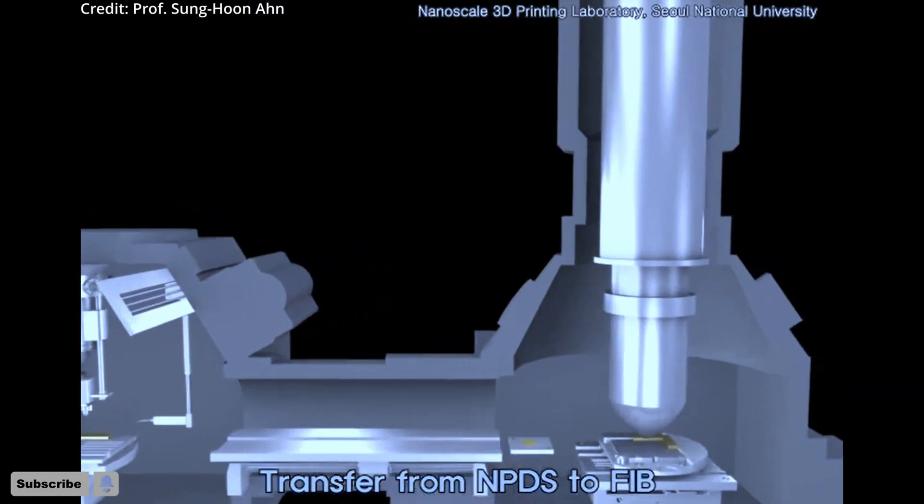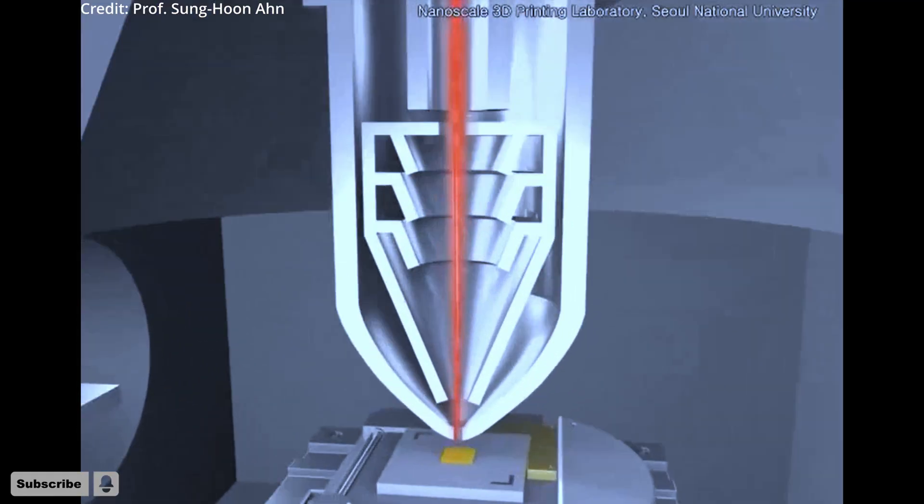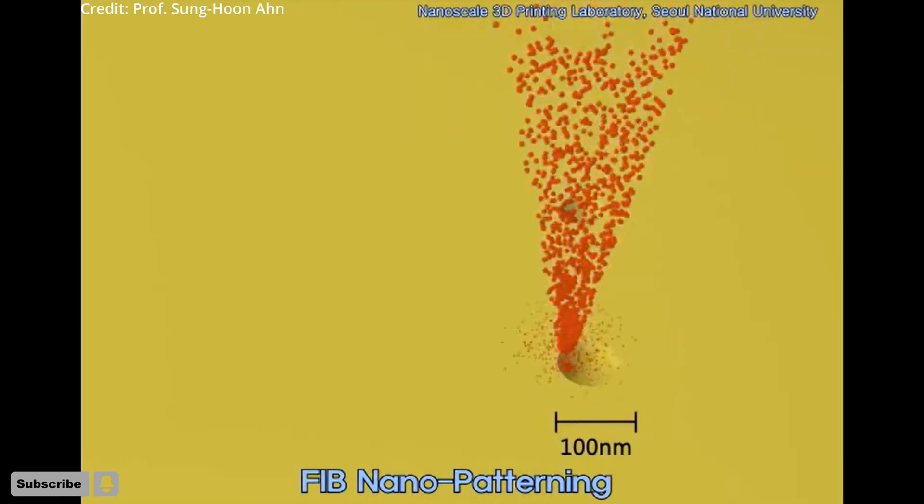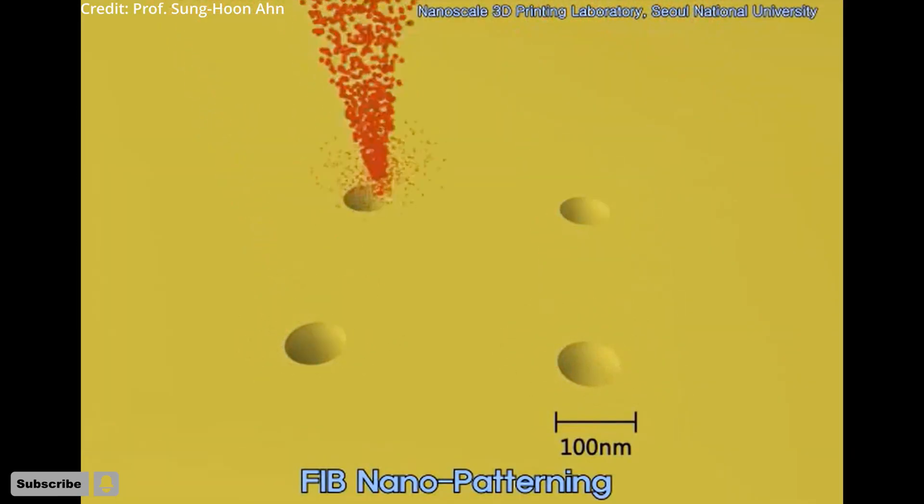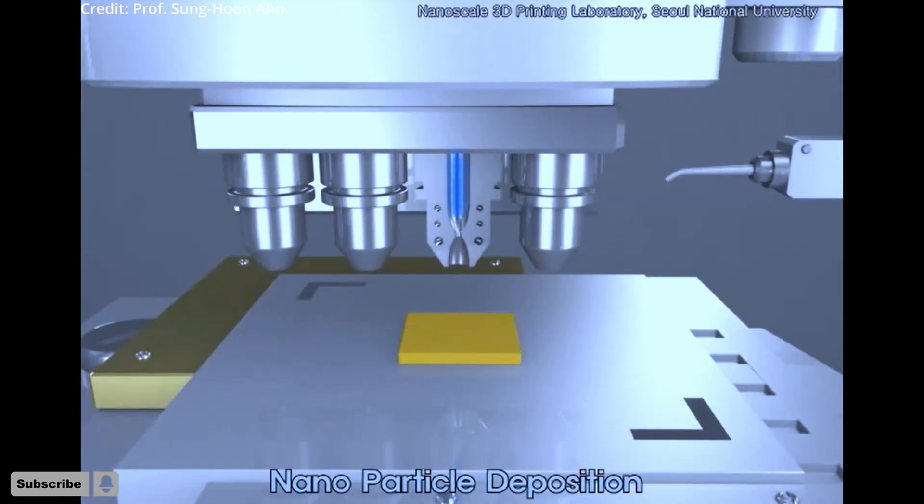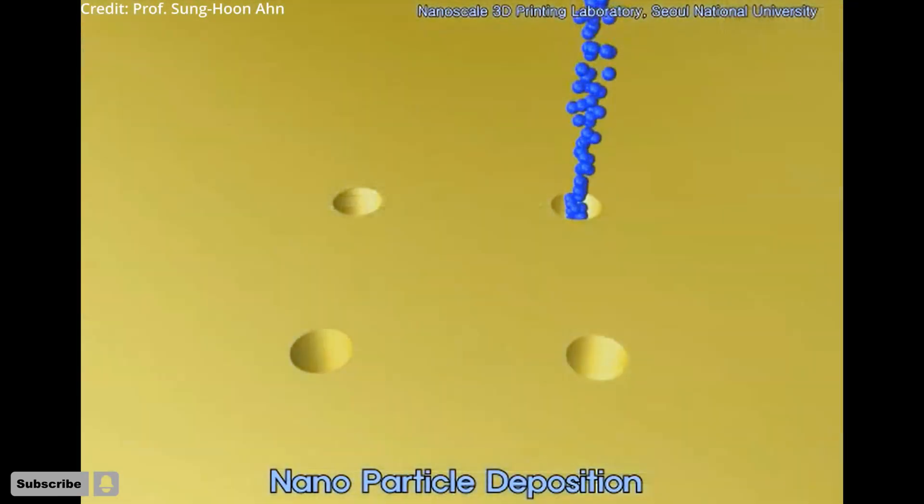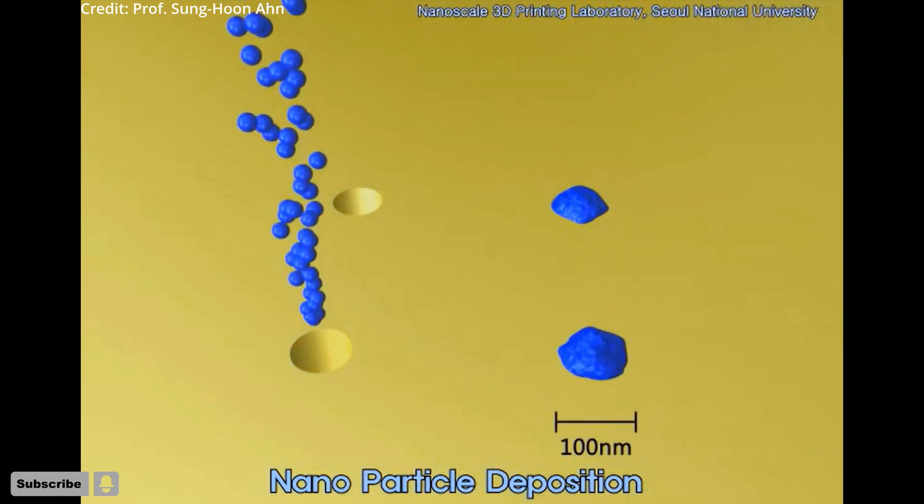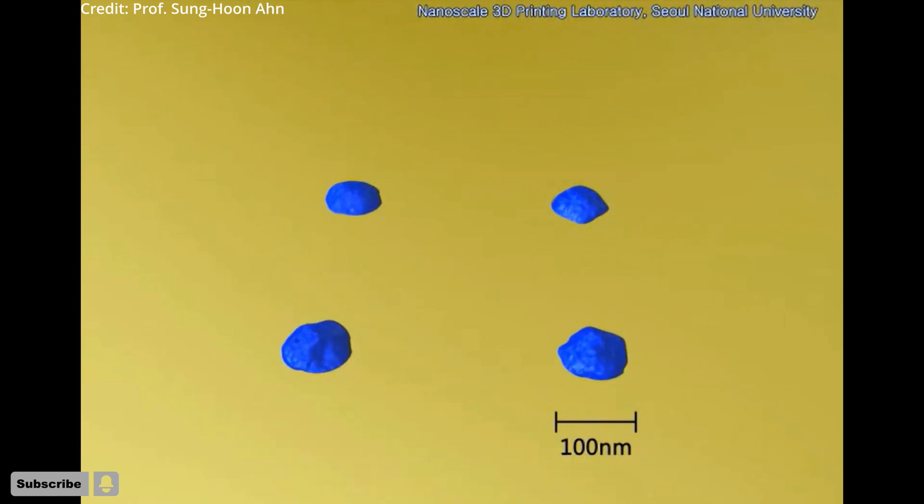Stanford University researchers have created a novel material that can be used for nanoscale 3D printing. Additionally, they printed tiny, lightweight lattices using the newly developed material.